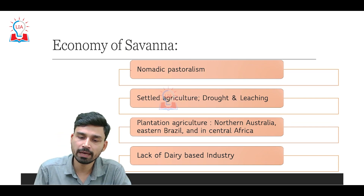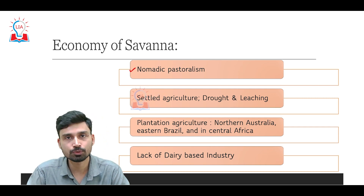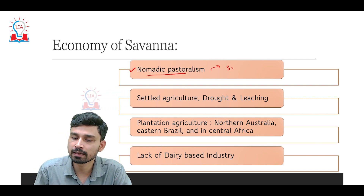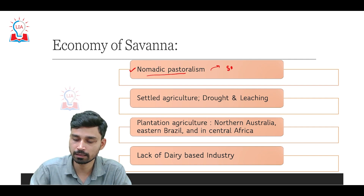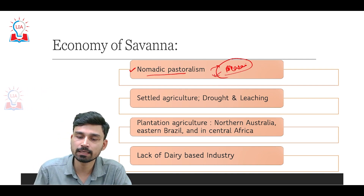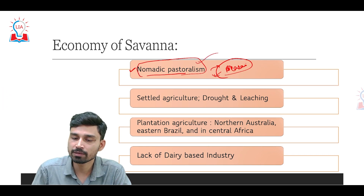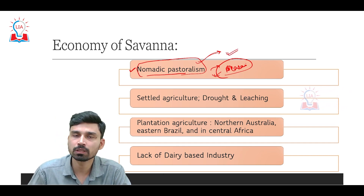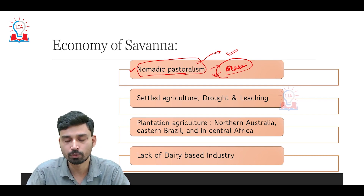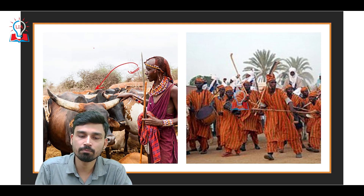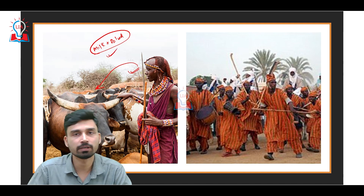Regarding human economy, three major kinds of economic activity are associated with the savannah region. The first is nomadic pastoralism, practiced by the Maasai tribe living in Kenya and Tanzania. The Maasai tribe practices nomadic pastoralism — they are dependent on their cattle and keep moving from place to place in search of grasses and fodder. They depend on large numbers of cattle, consuming milk as well as blood of cattle as part of their regular diet.